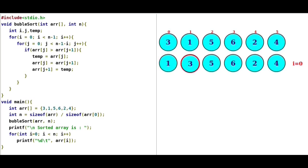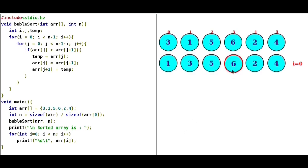Then J is incremented to 1. Now array[J] = 3 is not greater than array[J+1] = 5, so they are in correct order — no swap. Increment J again; now J is at index 2. Compare 5 with 6 — correct order, no swap. Increment J; now J is at index 3. Compare 6 with 2 — wrong order, so swap. Increment J to 4; compare 6 and 4 — wrong order, so swap. Then J becomes 5; since 5 is not less than 6−1−0 = 5, the inner loop terminates. After the first pass, the biggest element 6 is in its correct position.